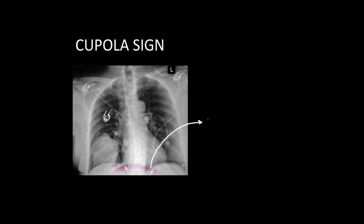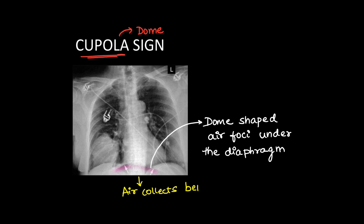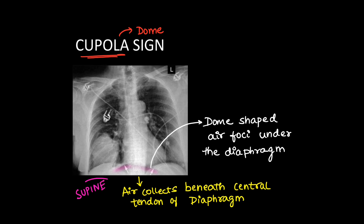Coming to cupola sign: here we can see free air collected under the diaphragm in the form of a dome — the word cupola means dome. This is usually seen in supine x-rays when air is collected beneath the central tendon of the diaphragm, so it is seen on supine films.